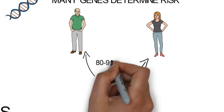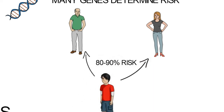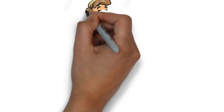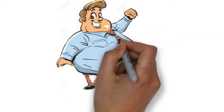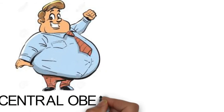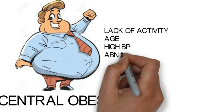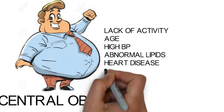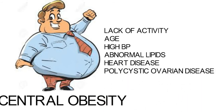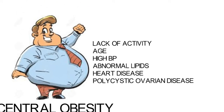Along with genetic mutations, there are several other risk factors that may increase the likelihood of developing diabetes. These include being overweight, having a waist circumference of more than 40 inches in males and more than 35 inches in females, central obesity, lack of physical activity, increased age, high blood pressure, abnormal lipids, history of heart disease, and associated diseases like polycystic ovarian disease.